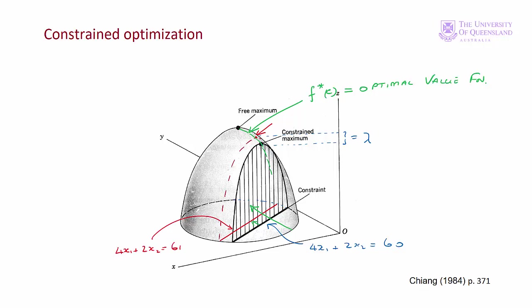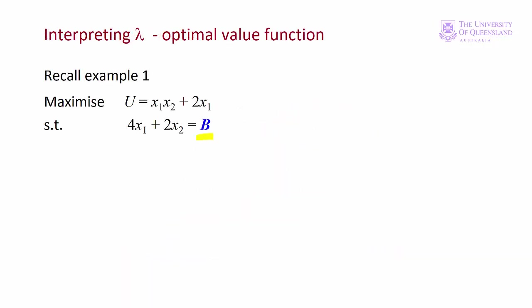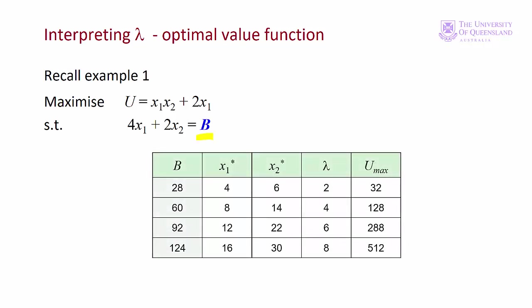We can also see the optimal value function by changing c in example 1. Let's call our budget b — that's a particular case of c, the right hand side of the constraint. We take various values of b and solve for x₁, x₂, and lambda. As b increases, the objective function moves further away from the origin and the optimal solution moves higher up along the surface, giving us a function of optimal values that depend on x₁ and x₂, which themselves depend on the right hand side of the constraint.